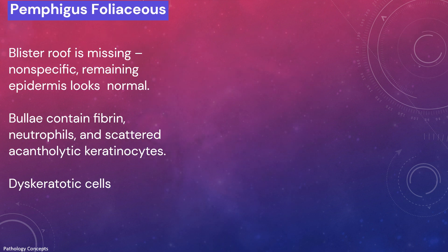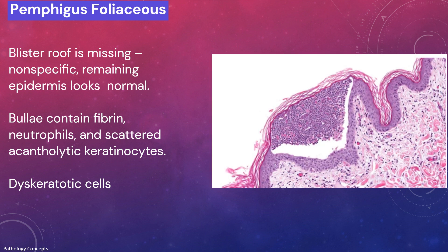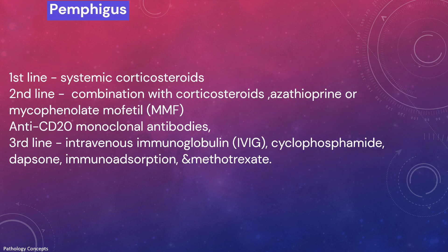In pemphigus foliaceus, if the blister roof is missing, the remaining epidermis looks relatively normal, so findings can be non-specific. The bullae contain fibrin, neutrophils, scattered acantholytic keratinocytes, and keratotic cells in the granular layer of older lesions, which distinguishes pemphigus foliaceus from pemphigus vulgaris.